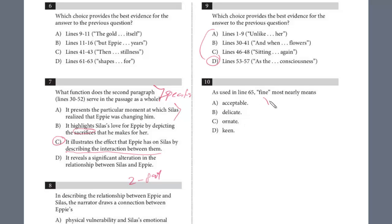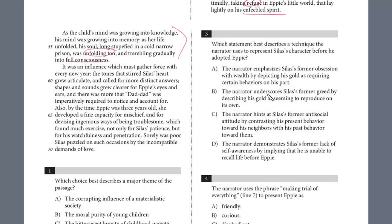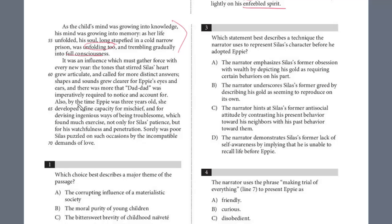And the last question, number 10, for this passage, this is what I call a vocab or a word in context. And you just want to look for evidence that would reinforce and try to predict these, see if you can come up with it independently. And we know fine is not too difficult of a word, so it might be a secondary meaning of it. Let's take a look in line 65 and try to predict what fine means. So here it is: 'Also by the time Eppie was three years old, she had developed a fine capacity for mischief and for devising ingenious ways of being troublesome, which found much exercise, not only for Silas's patience, but for his watchfulness and penetration.' And so she had this fine capacity for mischief.